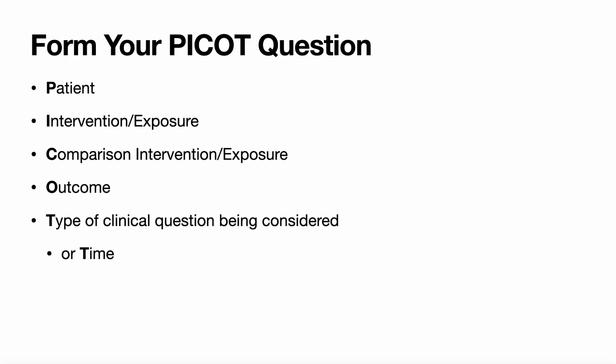So we do have a PICO question to be formed if we want to look up some research on how we can help our patient. The P stands for patient, the I stands for intervention or exposure, the C stands for comparison intervention or exposure, the O is the outcome, and the T is the type of clinical question being considered — in this case, therapy. Sometimes T stands for time, but here it stands for the type of clinical question.